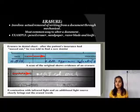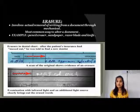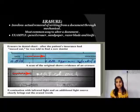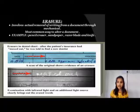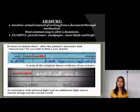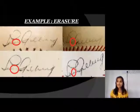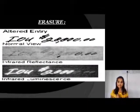Erasure. Erasure involves actually removing writing from a document through a mechanical means. If anyone has erased something in the document using rubber or a razor blade to cut something out of the document, it means that the document has been erased. These are examples of erasure.